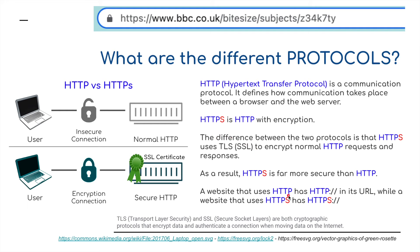How does this all work? HTTP — Hypertext Transfer Protocol — is a communication protocol that defines how communication takes place between a browser and a web server. HTTPS is basically HTTP with secure encryption. The difference is that HTTPS uses TLS or SSL to encrypt normal HTTP requests and responses, making HTTPS far more secure than HTTP. TLS stands for Transport Layer Security, and SSL stands for Secure Socket Layer — both are cryptographic protocols that encrypt data and authenticate connections when moving data on the internet. HTTPS has the padlock.